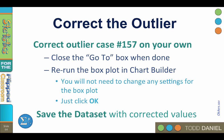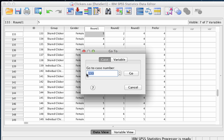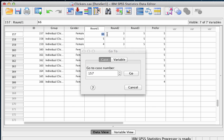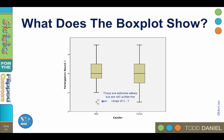So let's look at case 157. It has a value of 66. Correct that 66 to a 6. Run the box plot again in the chart builder by simply clicking OK — you do not need to make any changes in the dialog boxes because your original box plot settings will be saved. Now these box plots look much better. We still have some extreme values, but they are within the range of 1 to 7, so they look like legitimate outliers. Notice how they're indicated by circles, not by asterisks. We're going to leave them in the data set.